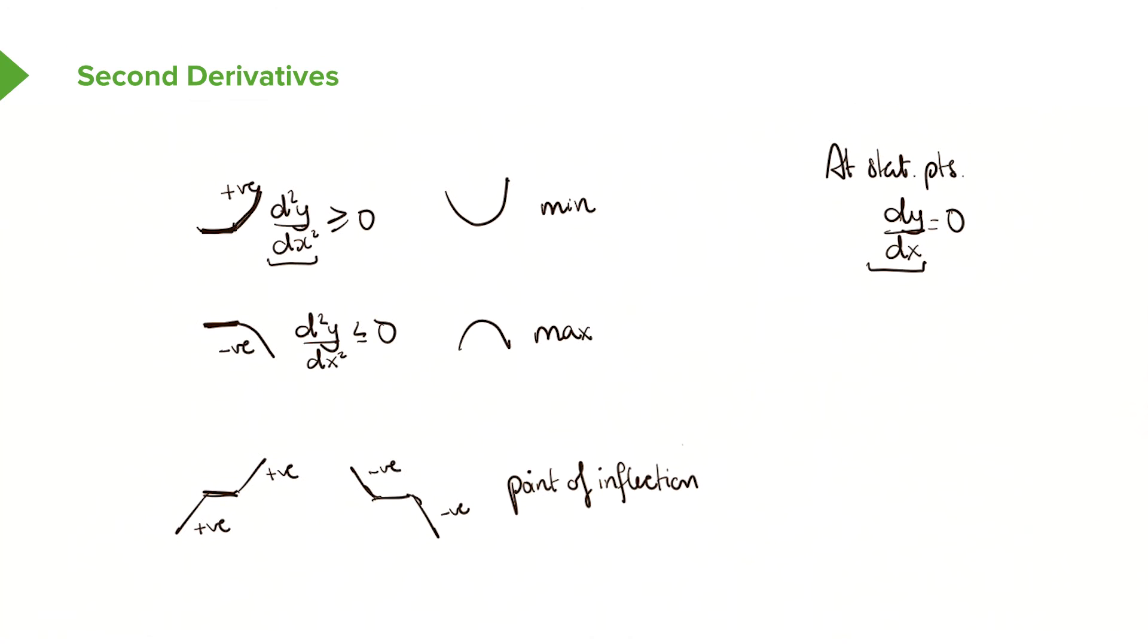That gives you your second differential here. Once you know your second differential, you substitute your x or y values in there, or both. And then you look at whether you get a positive answer, a negative answer, or a zero.